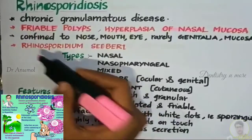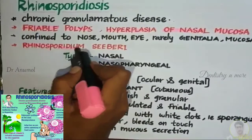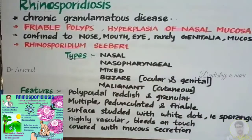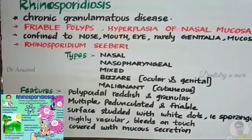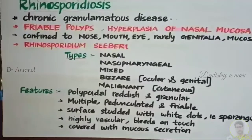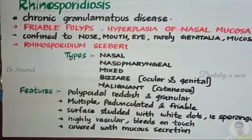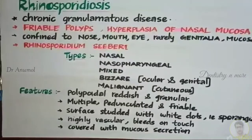The causative agent is Rhinosporidium seberae. Initially Rhinosporidium seberae was believed to be a sporozoan but later Ashworth classified it under fungus and described the life cycle and infectivity. It is believed that the spore is the most infective unit of Rhinosporidium seberae, but recently it is placed under a group of aquatic protist parasites.